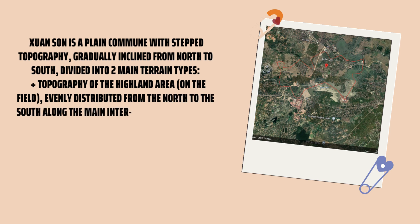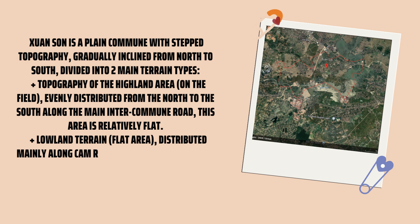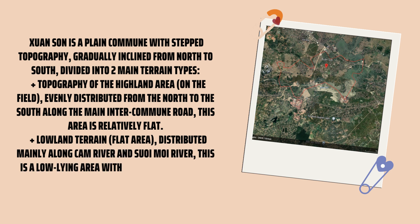The rainy season is concentrated from April to September, accounting for 75% to 80% of the total annual rainfall. The dry season is from October to March of the next year, with total rainfall accounting for 20% to 25%.